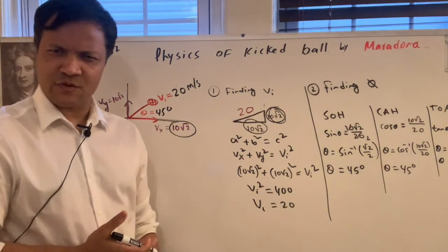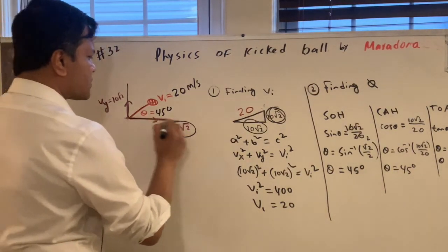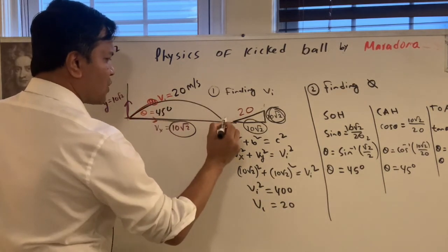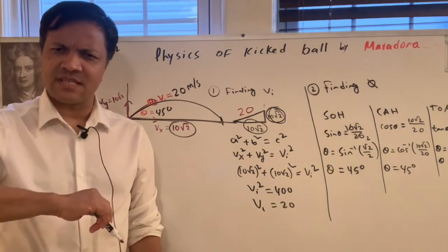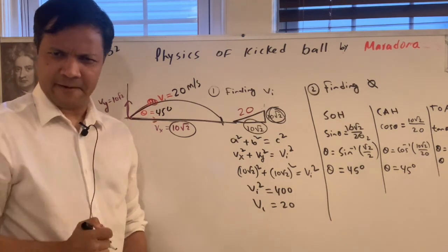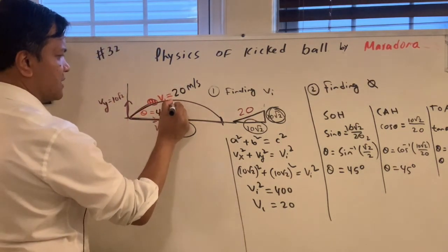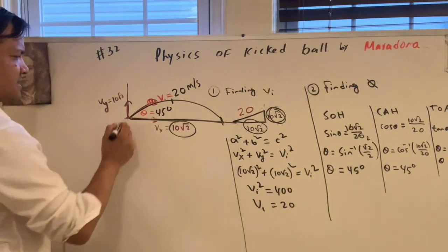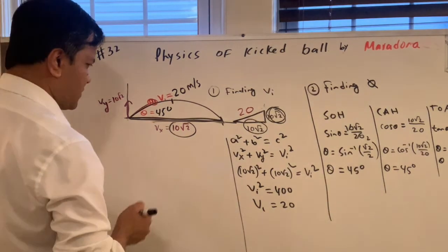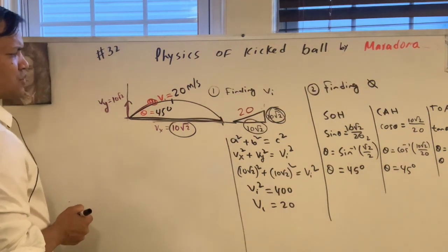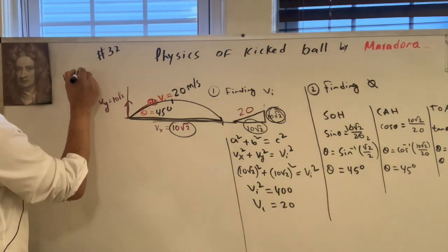So he kicked the ball at 45 degrees — that's how he achieved maximum range. The goal post was far away; I don't know exactly how far, but he scored. To find that distance — the range — I first need to know how long the ball was in the air. I need the elapsed time, and that will allow me to find the range.